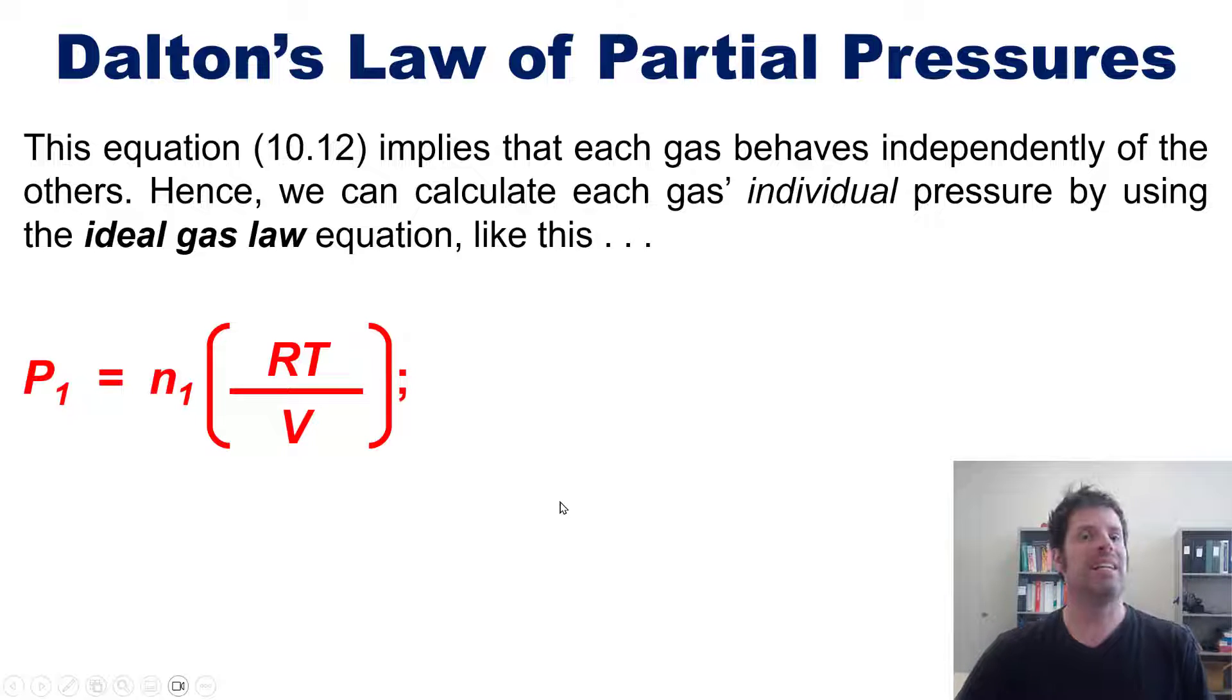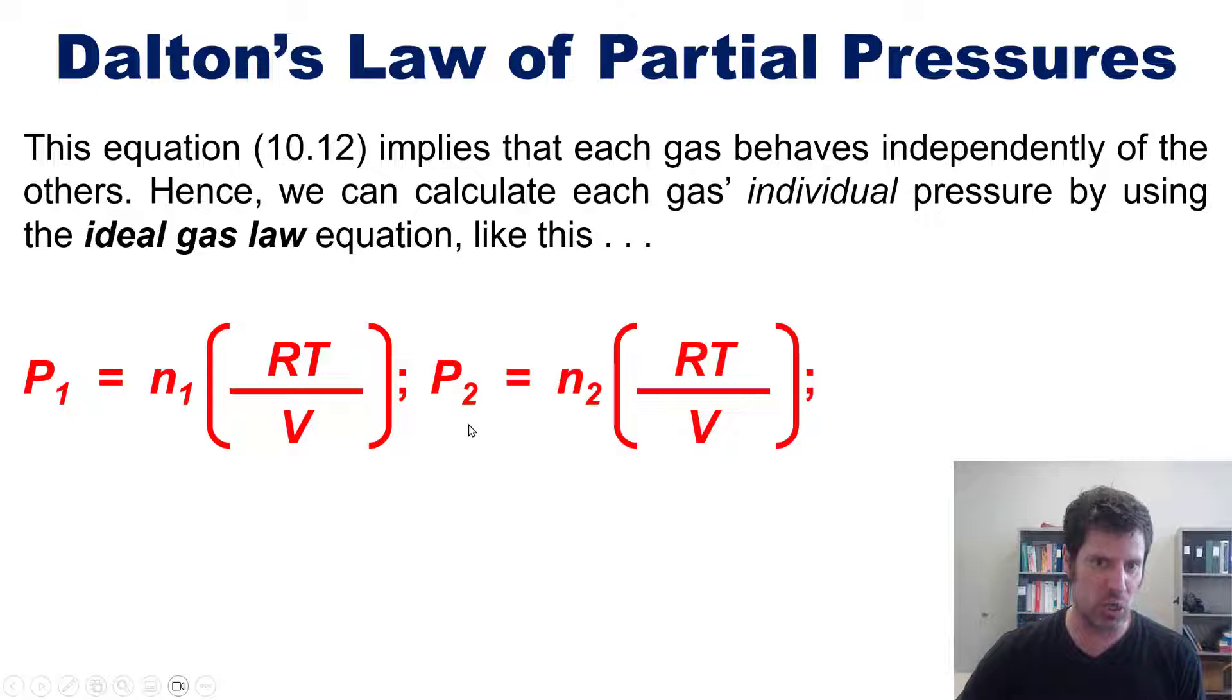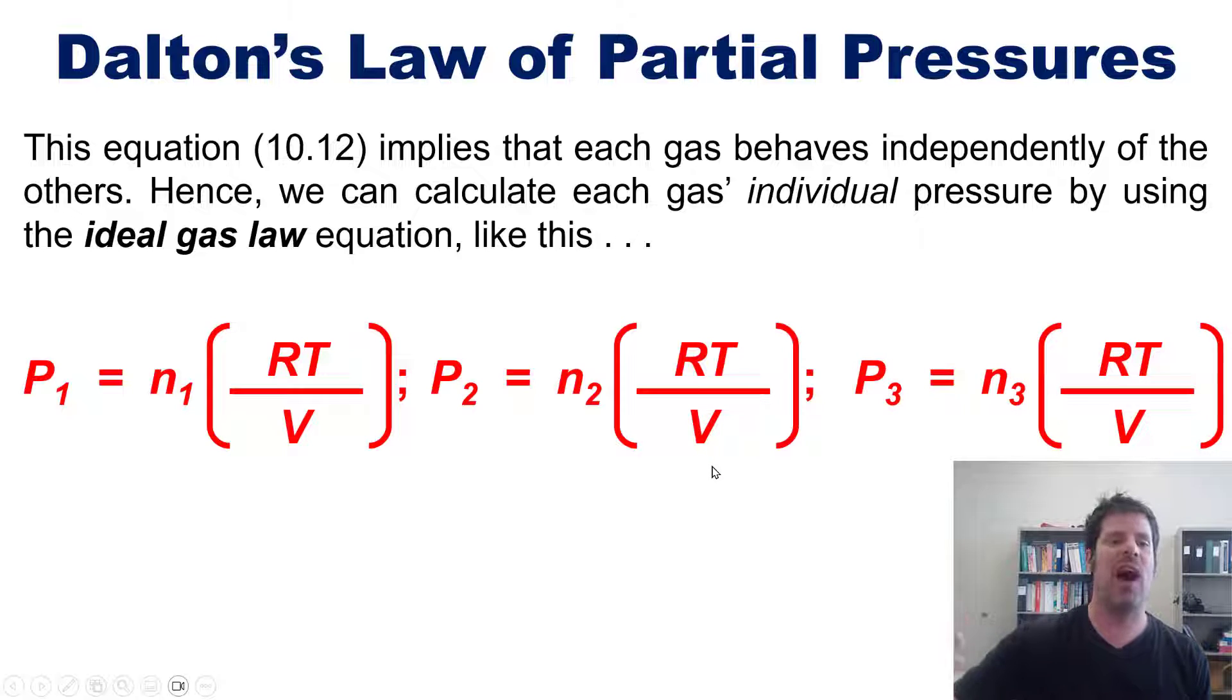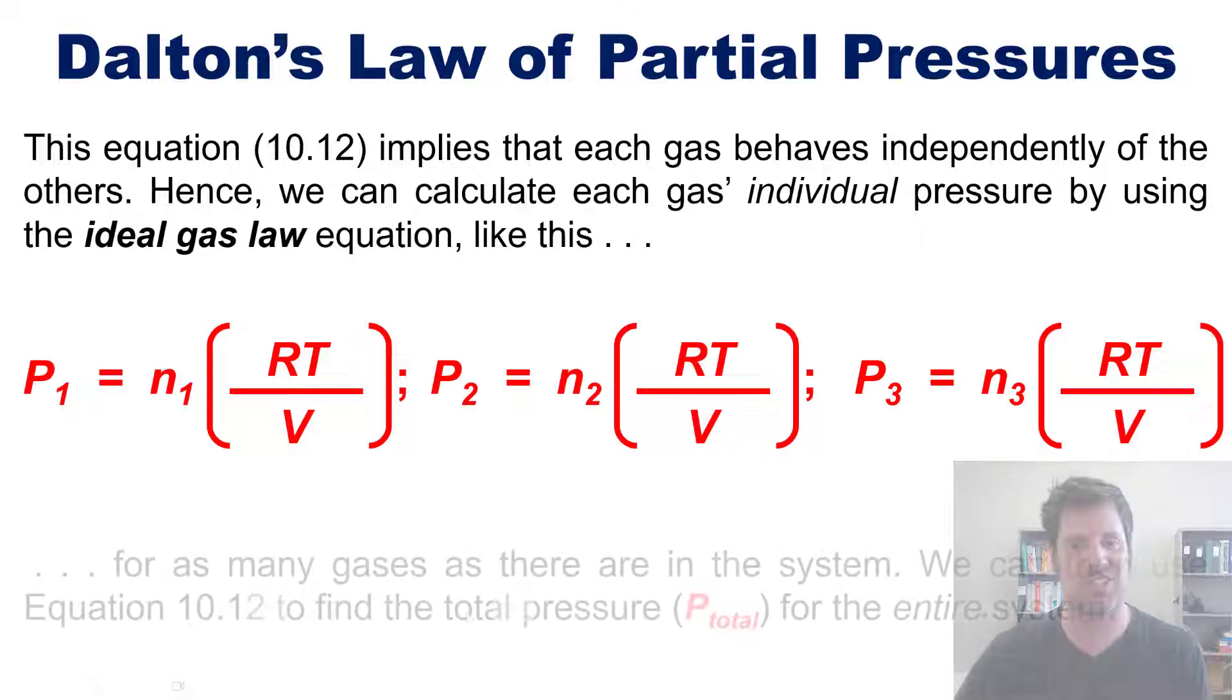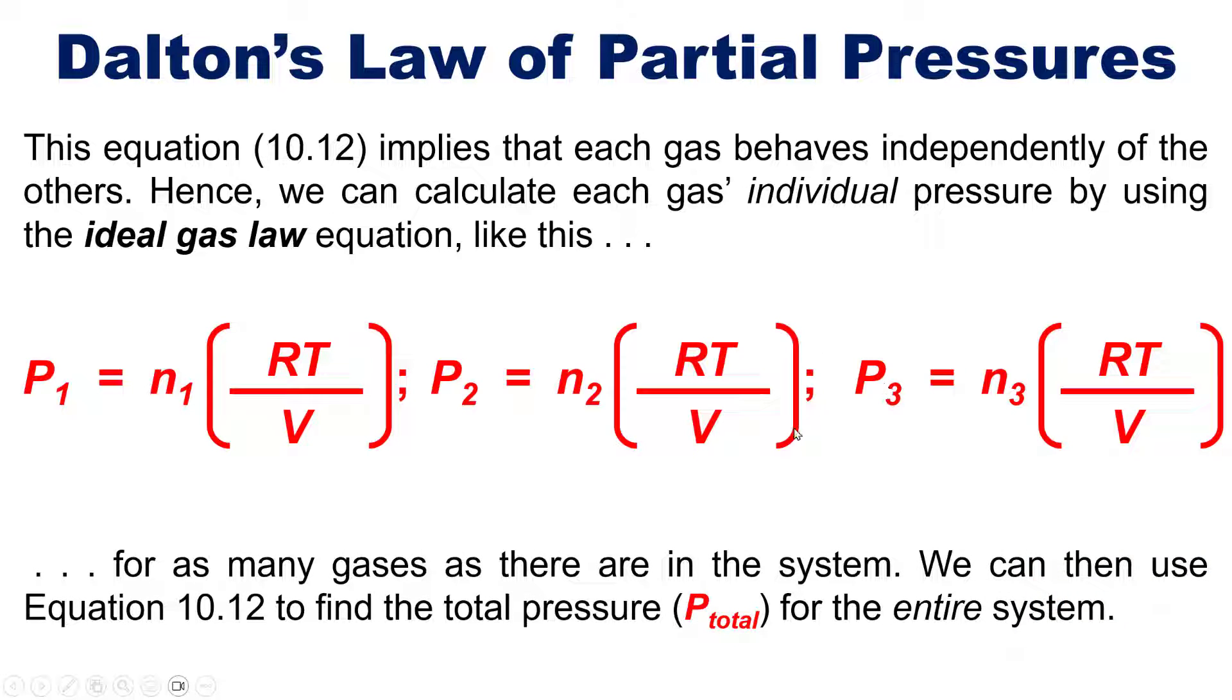Separately, the pressure of gas number 2, which we'll call P2, would be equal to that gas number 2's number of moles N2 multiplied by RT divided by V, and so forth for gas 3, 4, 5, and however many gases you have in the system. Once we have all the individual pressures for each gas, we can then add them up together to get the overall total pressure for the entire system, which segues into a gorgeous video problem.